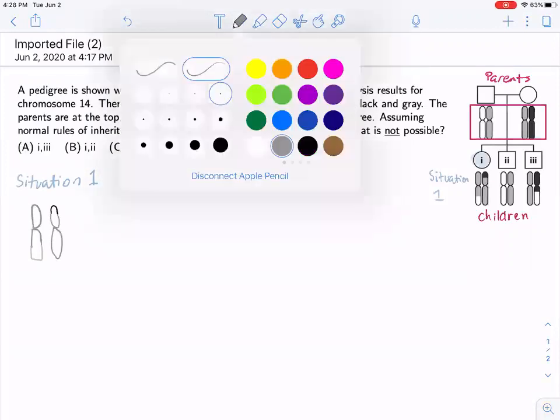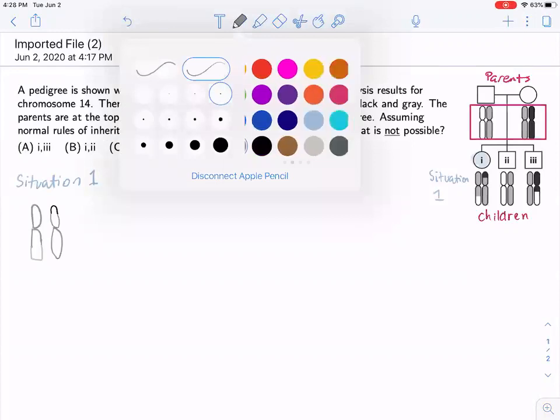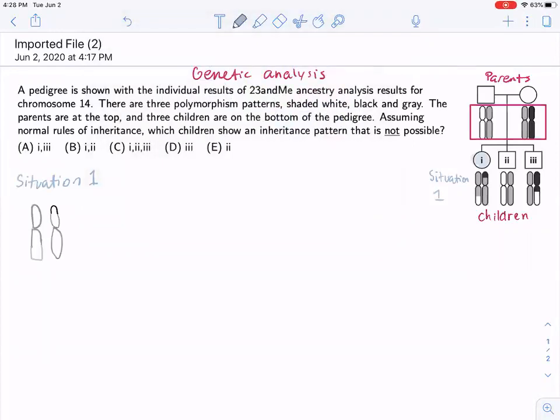And so we have this, and then we have that thing over here. So if we're thinking about this, how would it be possible for us to get from the parents, which are a singular white and a singular gray and a singular black to what we have over here?